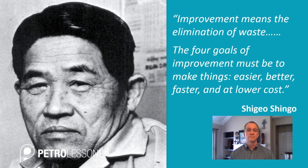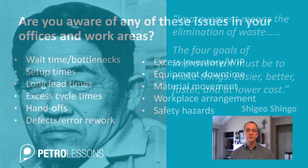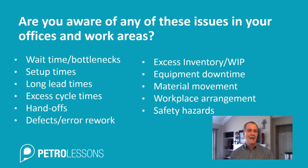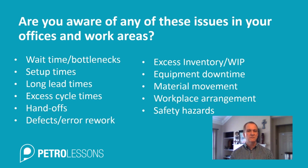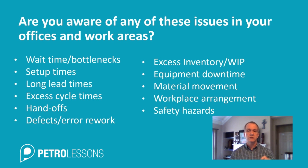You might have certain issues in your office or work area — do you have any of these? Are there bottlenecks or wait times in your area? Do you have setup time issues, long lead times? What about defects and errors, excessive inventory, equipment downtime, excessive movement of material or paperwork? What about the layout of your work area? Most people, when asked, will say they have all of those and more. These should be seen as issues to be addressed and opportunities to apply lean to solve those problems.